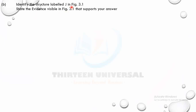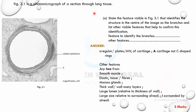The next question asks: identify the structure labelled J in figure 3.1 and state the evidence visible that supports your answer. J has a large lumen — try to identify it. Based on the features visible, J is a blood vessel.